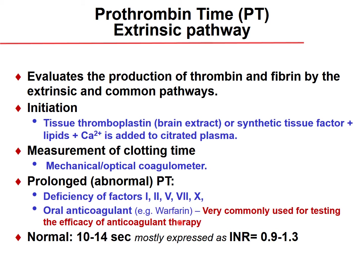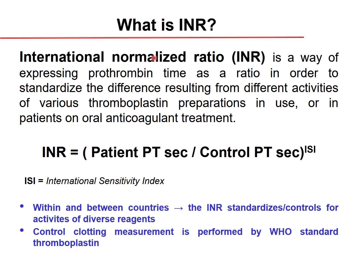The prothrombin time is mostly expressed as the INR (International Normalized Ratio), with a normal value between 0.9 and 1.3. The INR is a standardized way of expressing prothrombin time, meaning that INR values do not differ between countries or laboratories.